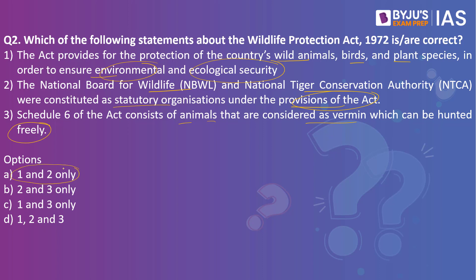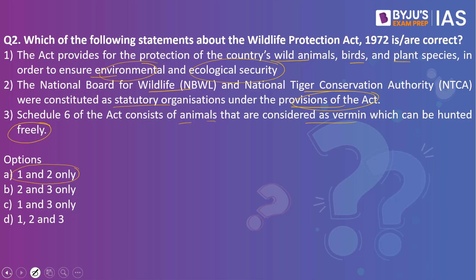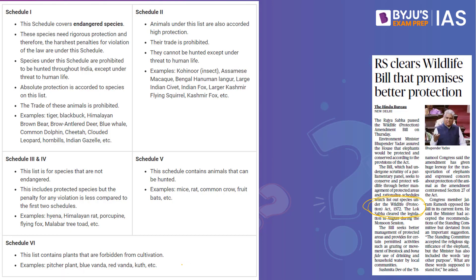The answer is 1 and 2 only. This article in The Hindu makes a reference to the Wildlife Protection Act of 1972. The third statement is wrong because Schedule 6 speaks about plants that are forbidden from cultivation — examples include pitcher plant, blue vanda, red vanda, kut, and so on. Schedule 1 consists of endangered species; Schedule 2 consists of animals accorded high protection with trade prohibited; Schedules 3 and 4 cover species not endangered; and Schedule 5 contains vermin that can be hunted. So vermin are under Schedule 5, not Schedule 6.